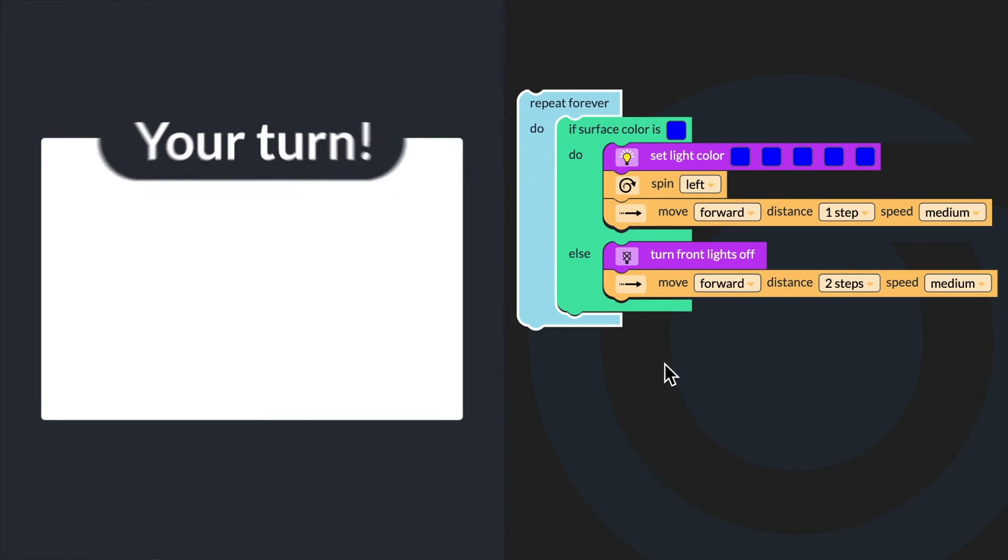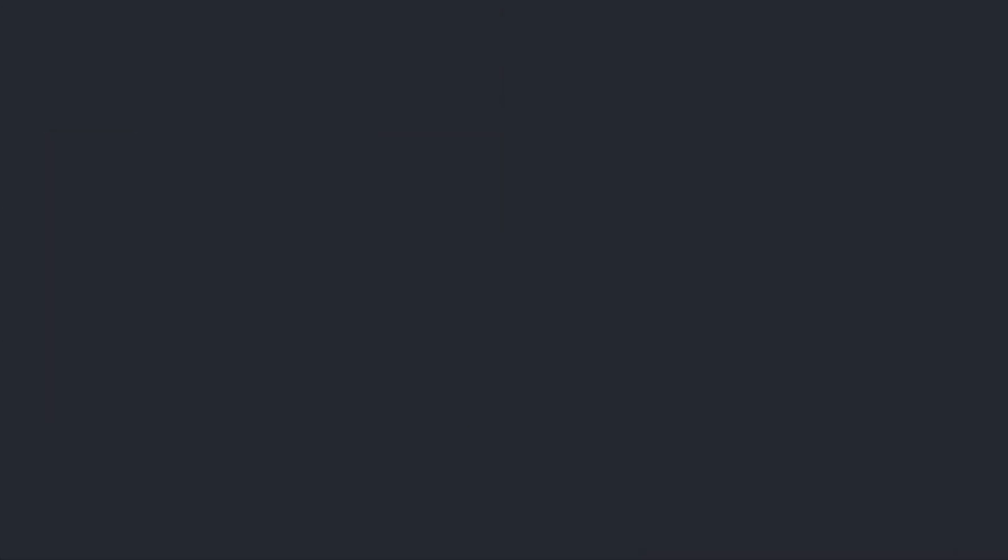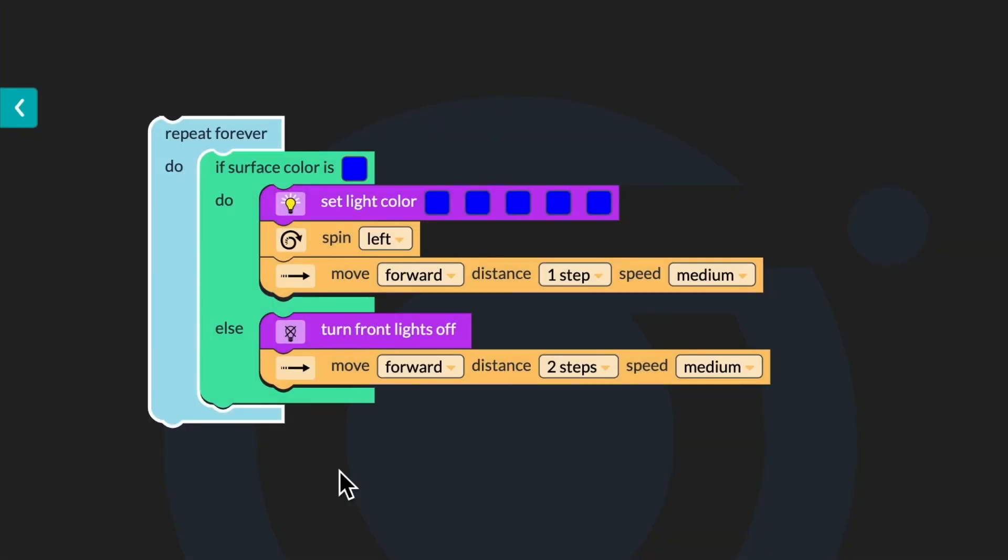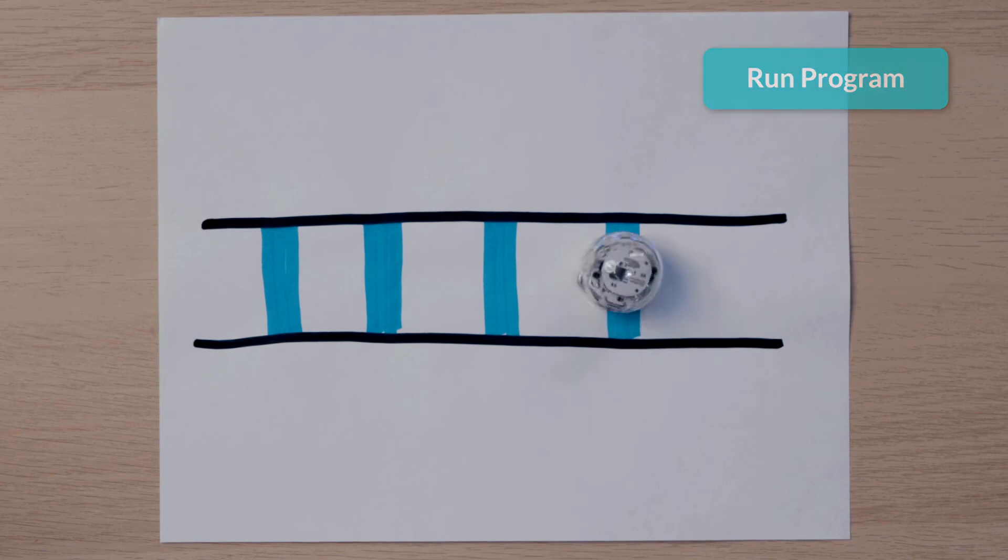Can you use code to complete the conditional and add a forever loop to your program? You are ready to run your program to watch Ozobot play in the blue puddles. Let's watch my bot in action. I am going to place my bot on one end of the pathway and click run program.